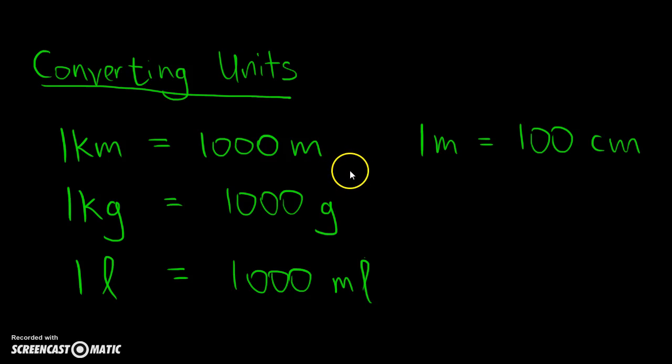One tip to give you is an easy way to remember it: whenever you see a 'k', like in km, the k actually means 1,000, so it's like three zeros. One km gives you 1,000 meters, one kg gives you 1,000 grams. So the k gives you a tip that it's 1,000.